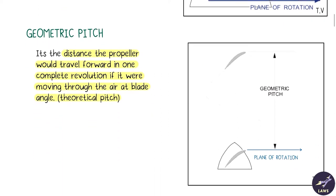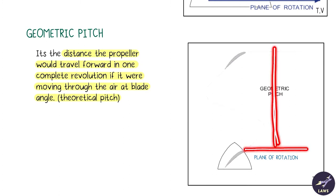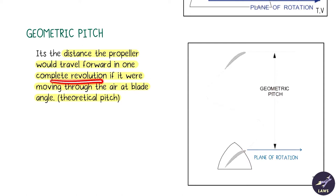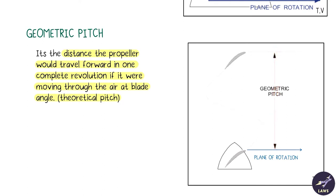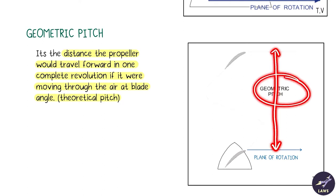Next is geometric pitch. It is the distance the blade moves in one revolution — specifically, the distance the propeller would travel forward in one complete revolution if it were moving through the air at blade angle. This theoretical distance is known as geometric pitch.